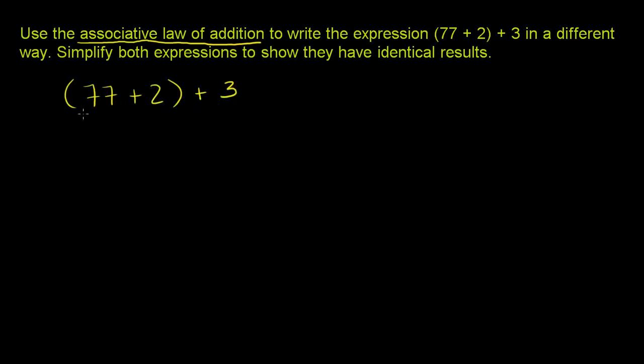These parentheses mean do the 77 plus 2 before you add the 3. So if you were to evaluate this, you would evaluate what's in the parentheses first. So you would say, well, 77 plus 2, that's 79.